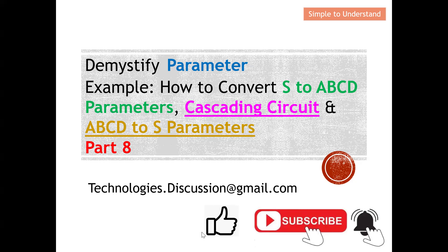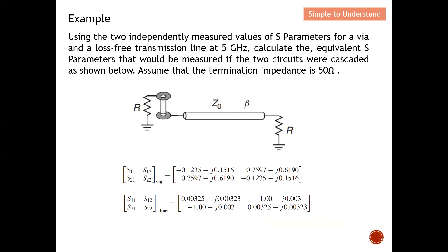Please help this channel by liking this video. For those who are new to this channel, please consider subscribing and turning on your notification bell. Thank you so much for your strong support. This is the example I showed in the Part 7 series discussion. We have two independent S-parameters for the via and the lossless transmission line, and the question is how to obtain the overall S-parameters.